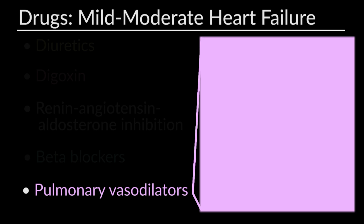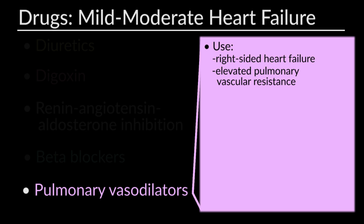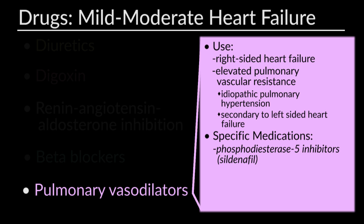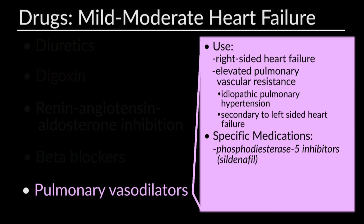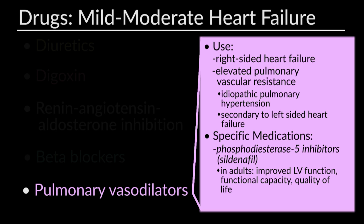Pulmonary vasodilators are used in right-sided heart failure secondary to elevated pulmonary vascular resistance. Pulmonary vascular resistance may be increased due to abnormalities of the pulmonary vasculature such as idiopathic pulmonary hypertension, or secondary to left heart failure with elevated left-sided pressures resulting in secondary pulmonary hypertension. Phosphodiesterase 5 inhibitor sildenafil is the most commonly used, associated with improved LV function, functional capacity, and quality of life in adults. There are multiple small studies demonstrating its usefulness in congenital anatomies including Fontan circulation.